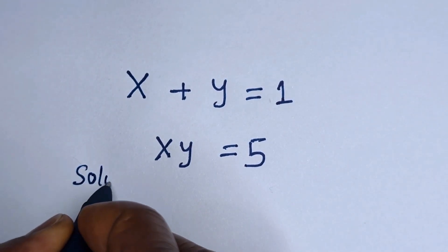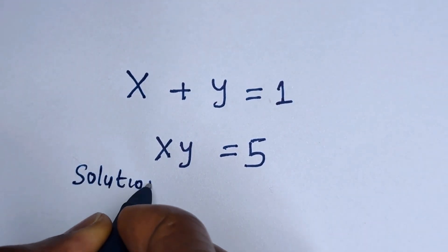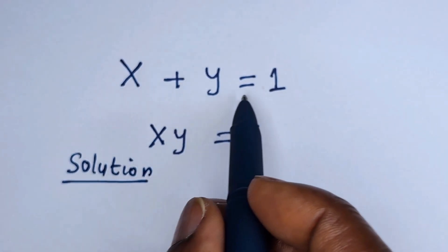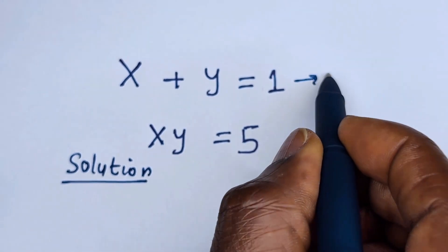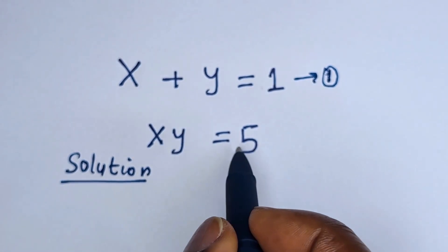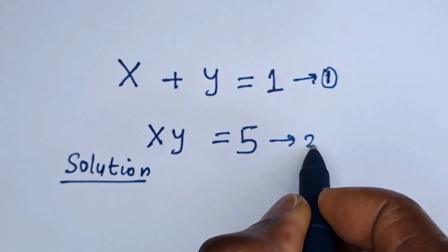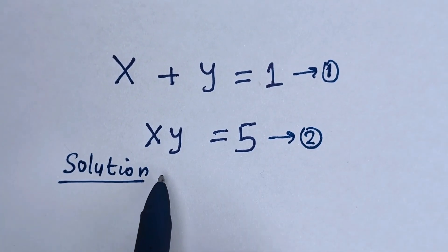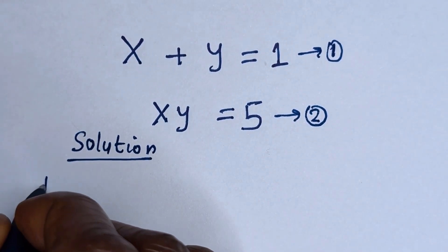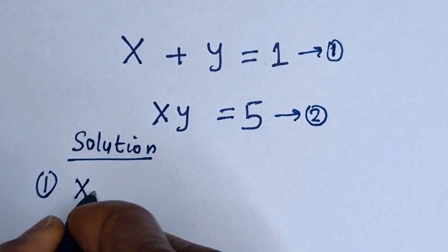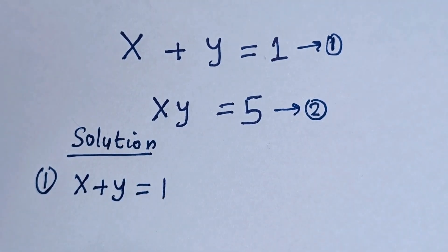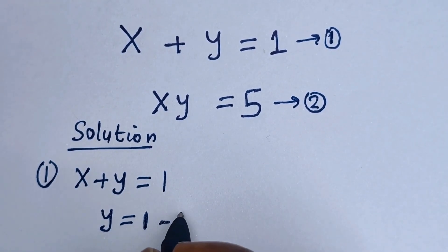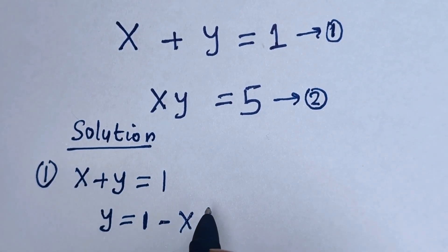Solution. S plus Y is equal to 1 — let us call this equation 1. S times Y is equal to 5 — let us call this equation 2. Then from equation 1, S plus Y equals 1, so Y is equal to 1 minus S. Let us call this equation 3.